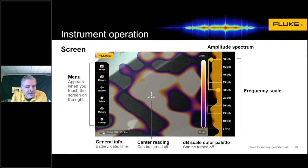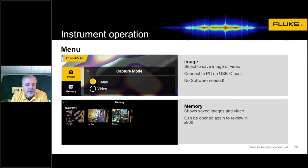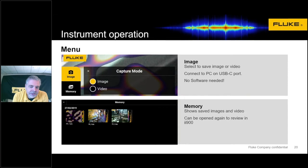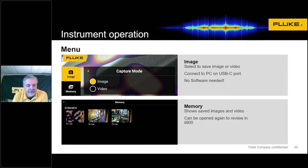Starting at the top of the menu, there's image and memory. From the beginning we had the ability to capture an image and capture video. When you capture an image, it's typically a JPEG of what you see on the display. Because it's a JPEG, you don't need any special software — you just connect this to your computer and it shows up like a secondary drive or jump drive, with no software required to get the image off the device. The memory button gives you a review of memory in the unit sorted by date, and you just use your finger to touch and open and review them.